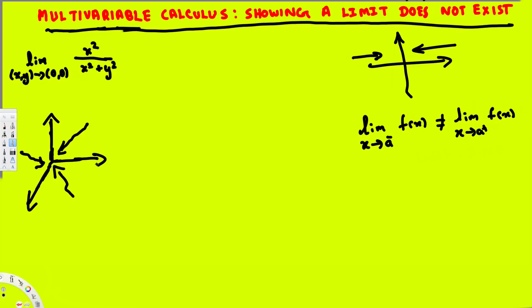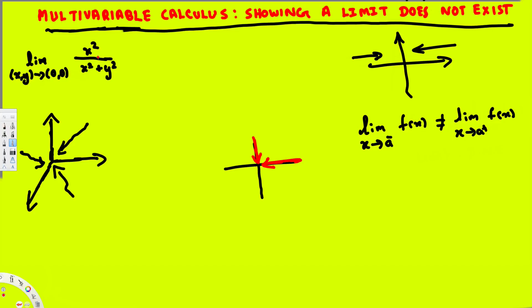Let's look at this in a 2D diagram. We are looking at a question where we approach zero. If we approach from the y-axis and that is not equal to approaching from the x-axis, we can say the limit does not exist. The problem here is: limit as (x,y) approaches (0,0) of x² over (x² + y²). If you plug in zero, you get zero over zero, so we cannot directly apply this, and we cannot use L'Hôpital's rule in three-dimensional space.